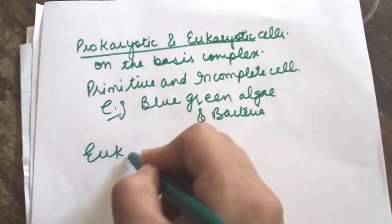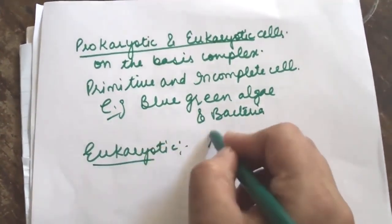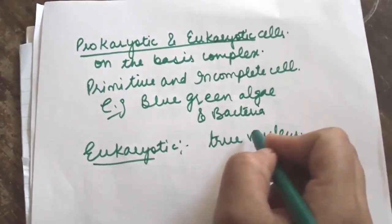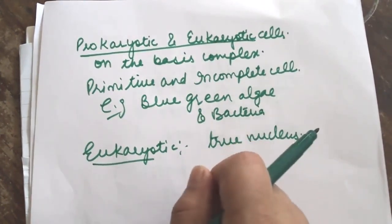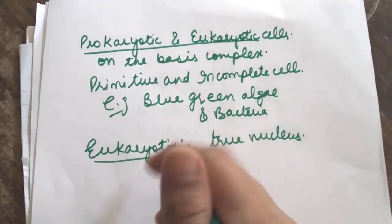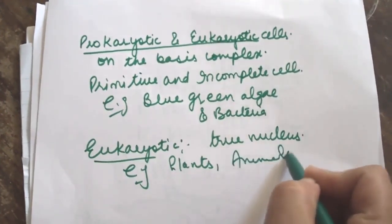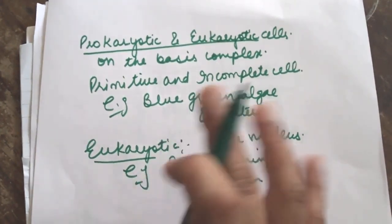Next is eukaryotic. Eukaryotic cells are those that possess true nucleus bounded by nuclear membrane. The eukaryotic cells have a well defined nucleus and well developed membrane bound organelles. The organisms which contain eukaryotic cells are called eukaryotic organisms, for example plants, animals, human. Or we can also call them advanced cells.